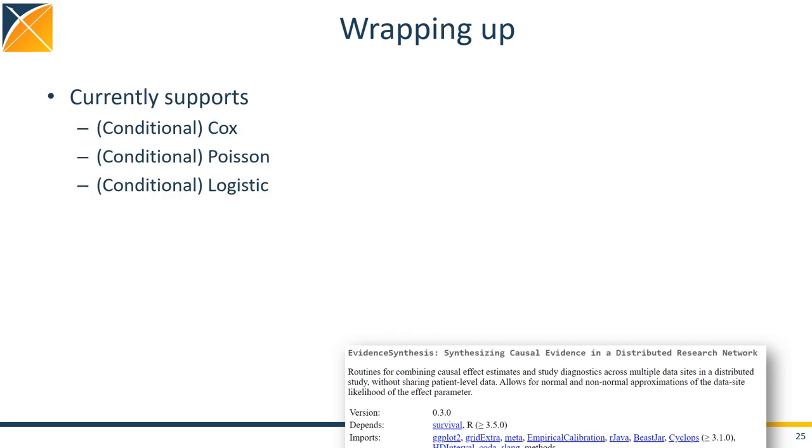The evidence synthesis package currently supports Cox, Poisson, and logistic regressions, either conditional on some strata or not. Even though we can currently combine evidence for one parameter only, the models themselves can have more than one parameter. These other parameters would be nuisance parameters that would be re-optimized at each point in the adaptive grid.